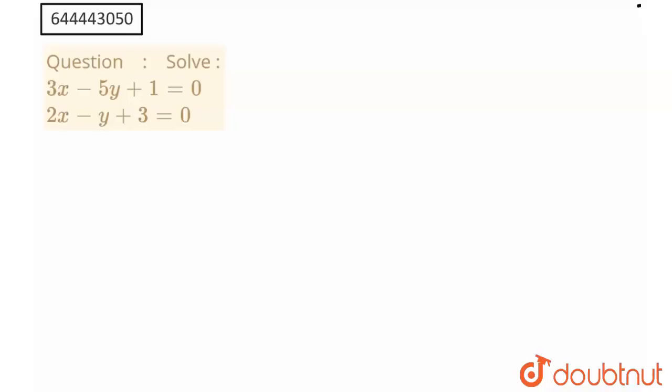So for solving this equation, what will I do? I'll multiply my first term with 2, and I'll multiply my second term with 3. By doing this, what will I get? I'll get 6x minus 10y plus 2 is equal to 0.